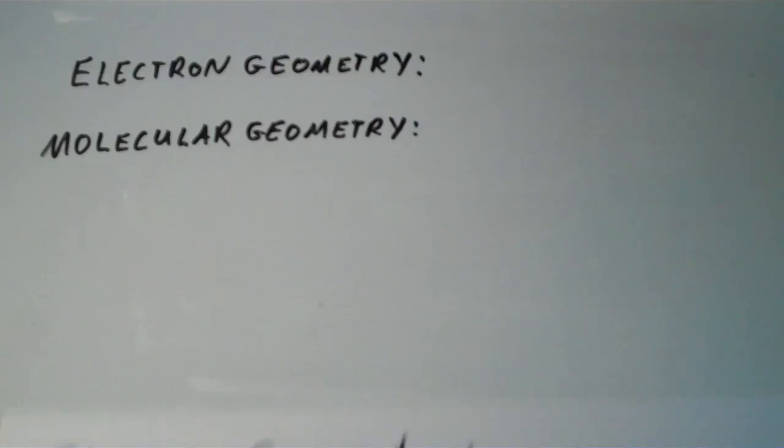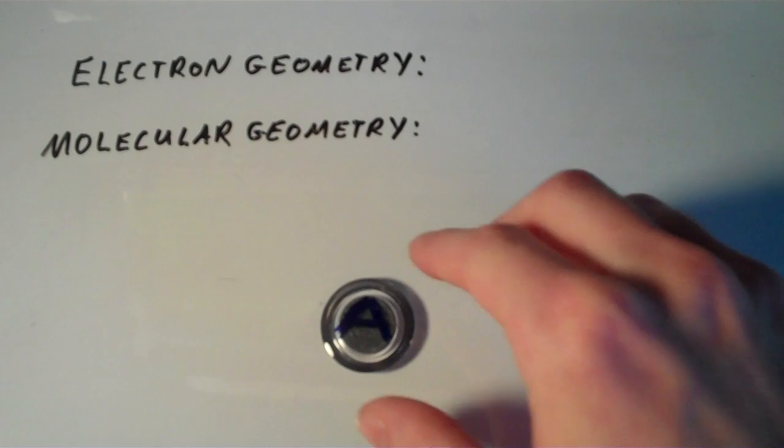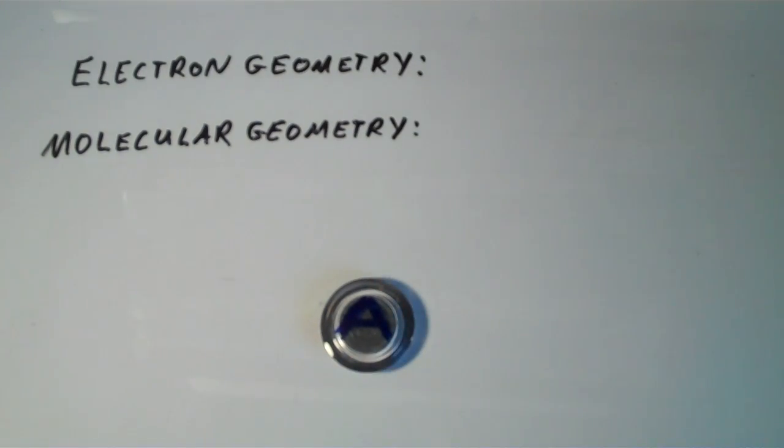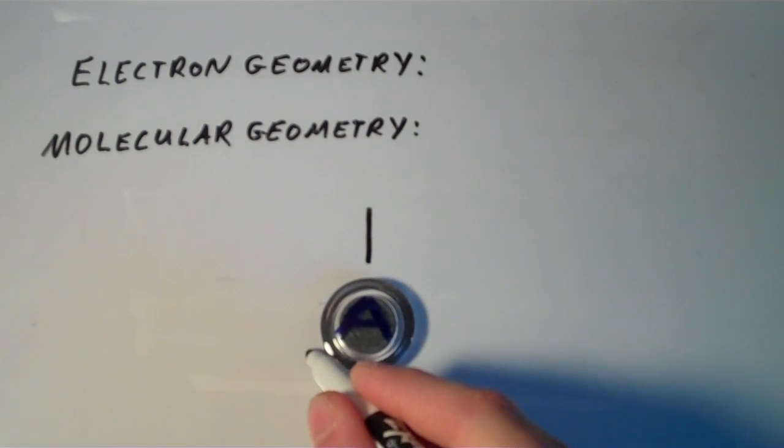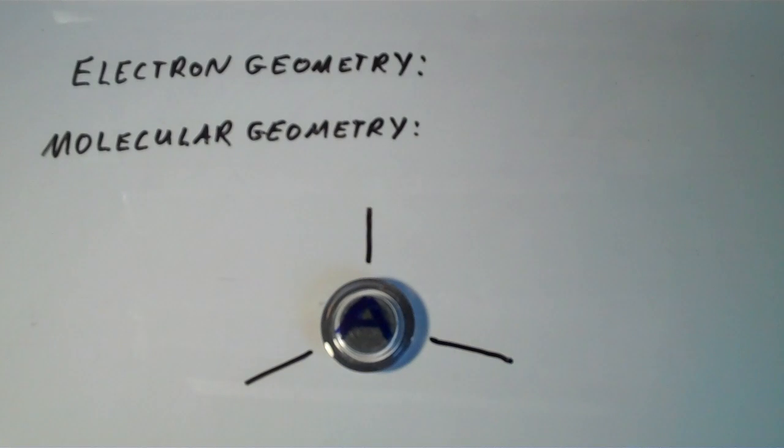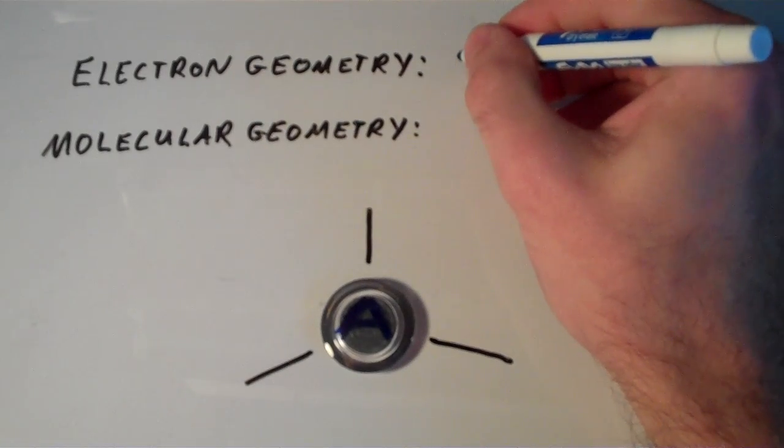So as an example, suppose you have a central atom A which has three electron groups around it. Now we've already established that these three electron groups are going to form a trigonal planar shape. So in other words, the electron geometry is trigonal planar.